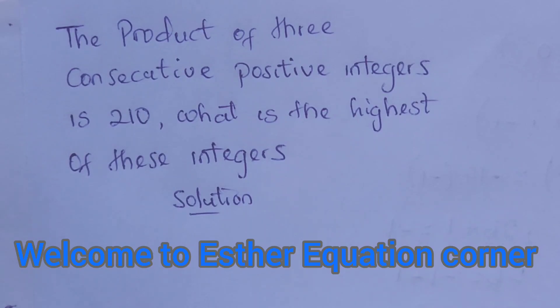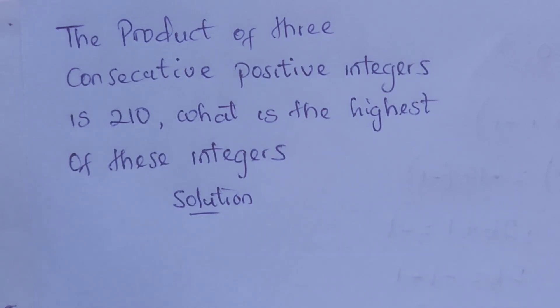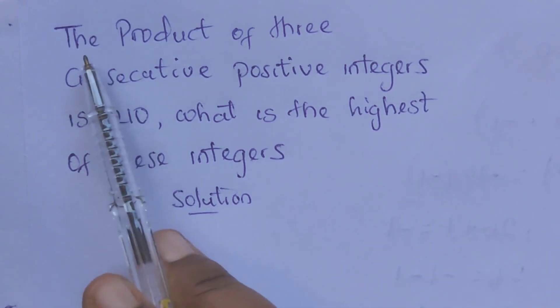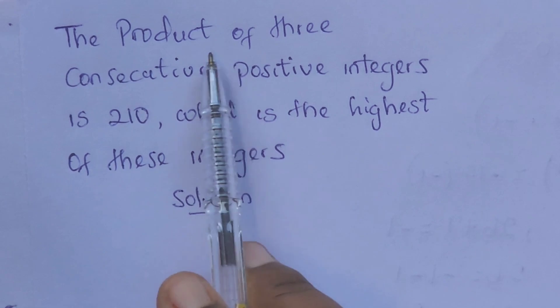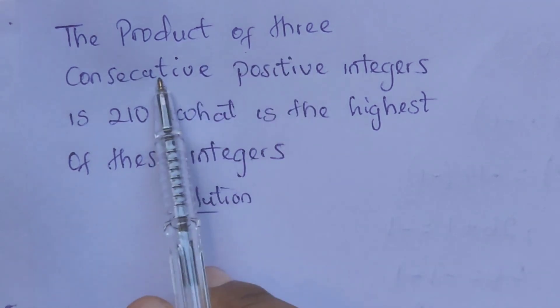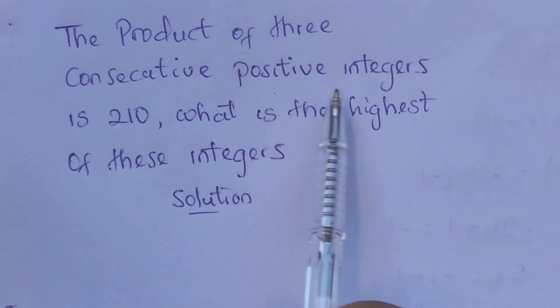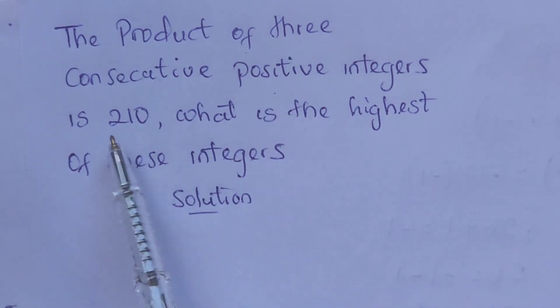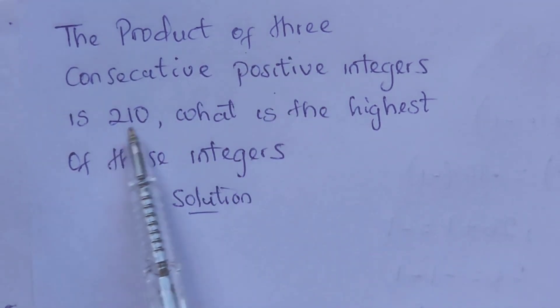Welcome to S-Like Question Corner. Today we have this word problem to resolve: the product of three consecutive positive integers is 210.